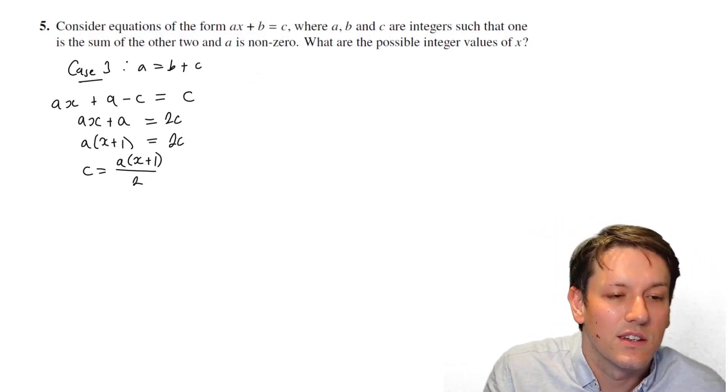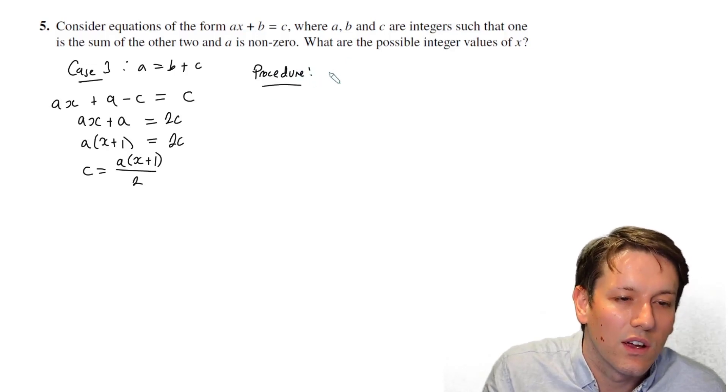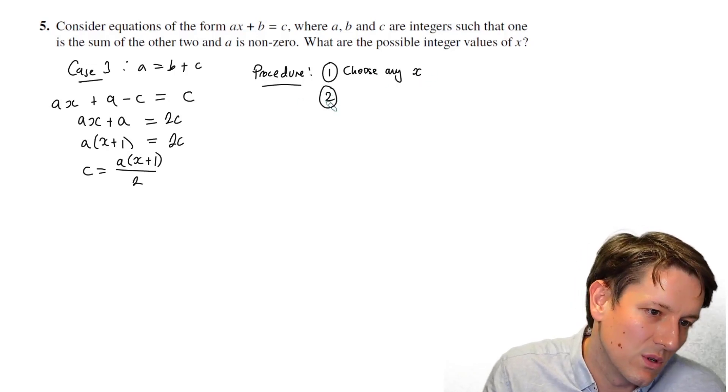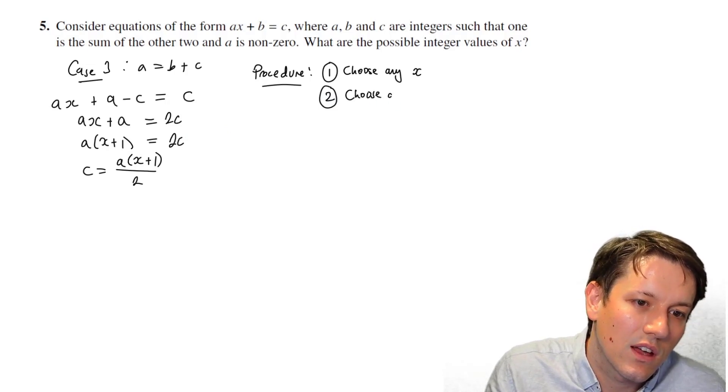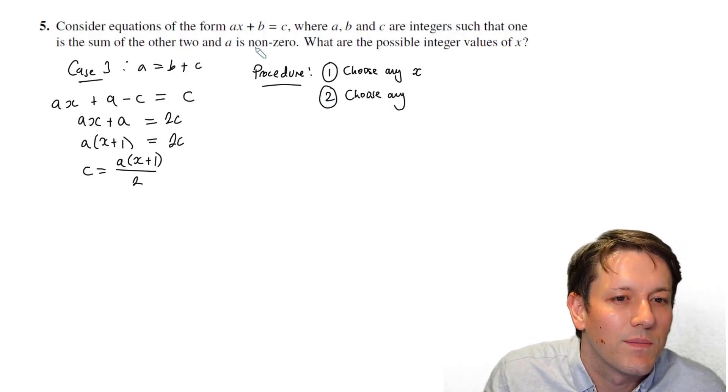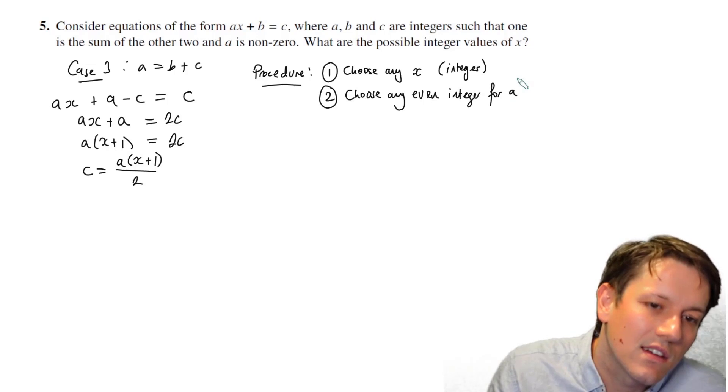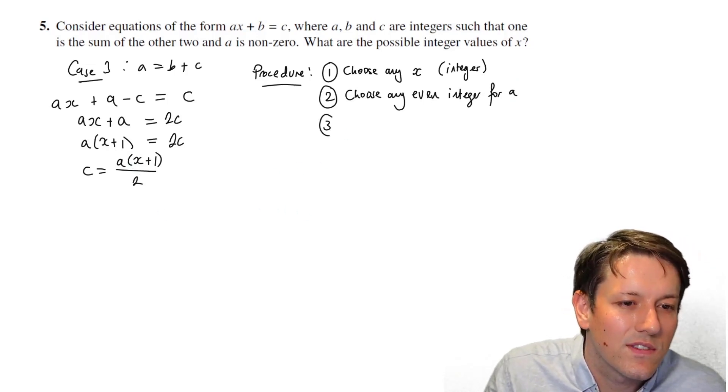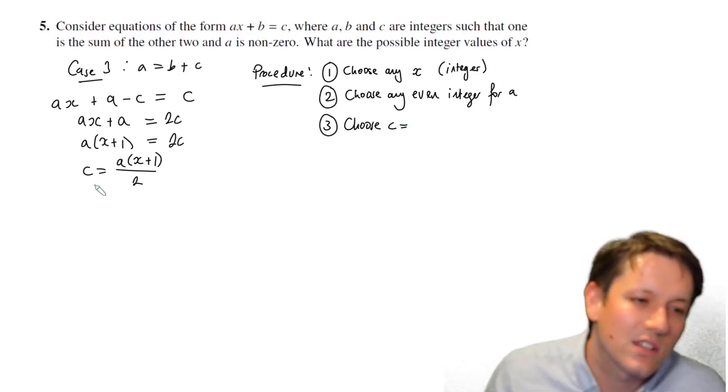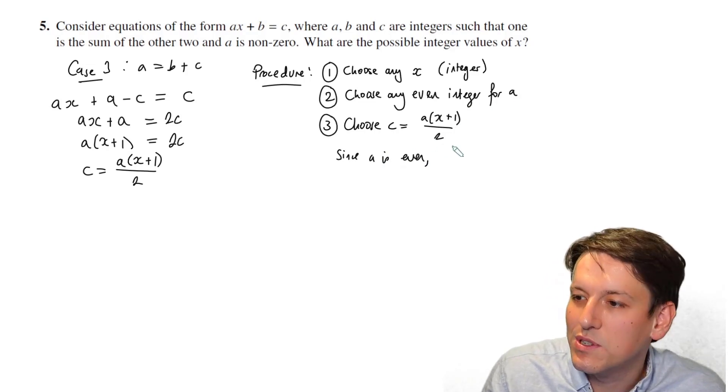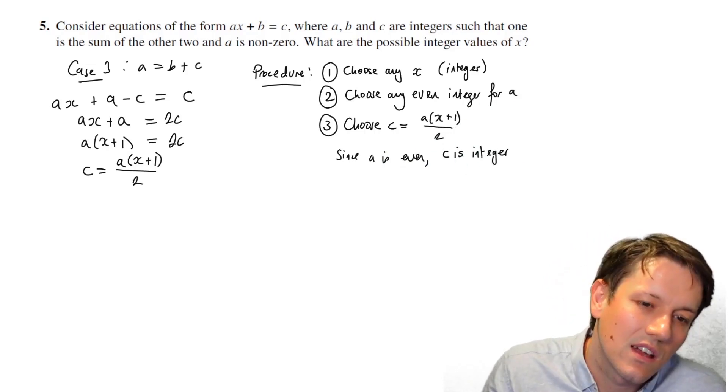Now I'm going to define a procedure. Step one, I'm going to choose any value of x. Step two, I'm going to choose any even integer for a. The reason I'm going to choose an even integer for a is I'm now going to choose c according to this equation: a times (x plus 1) over 2. And since a is even, when I divide it by 2, I'm still going to get an integer. So this means that c is an integer.